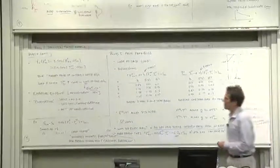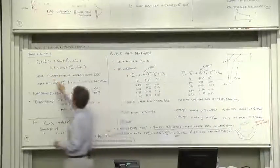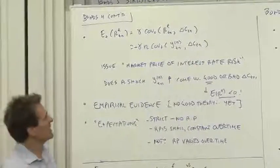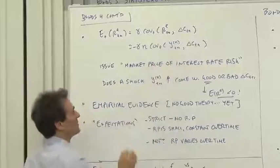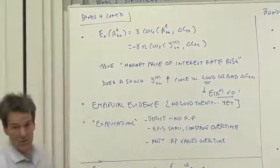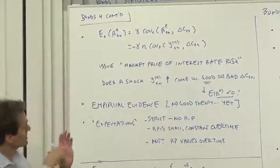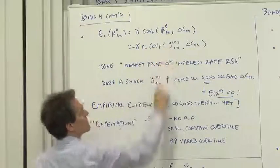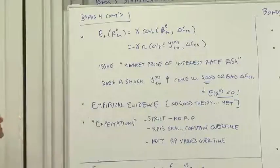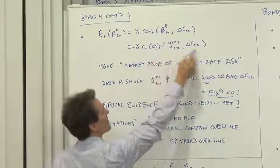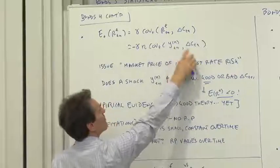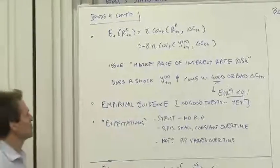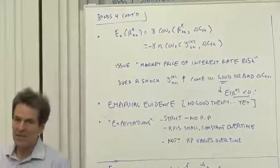How would we think about this a little more than just guessing and telling stories? We would think about it, of course, with a model. We would write down expected return is risk aversion times covariance with consumption growth. Now, the return on a bond, when the yield goes up, the return goes down. The yield goes up means the prices go down. So the return on the bond is roughly n maturity times the change in yield. So the expected excess return should depend on the covariance of interest rates with consumption growth, risk aversion coefficient, and maturity.